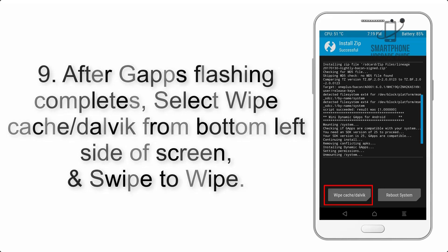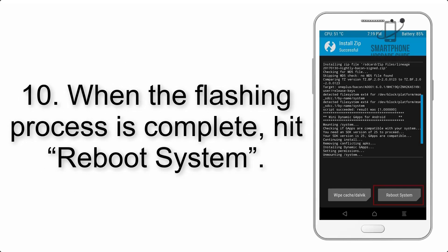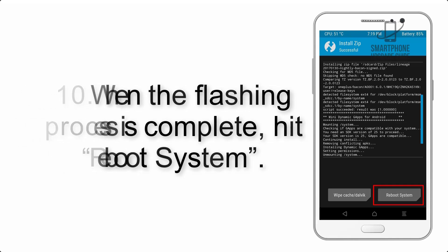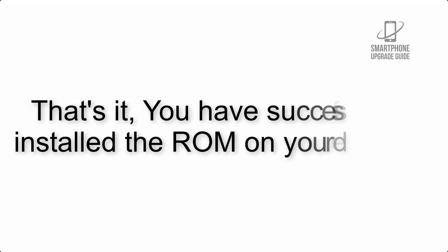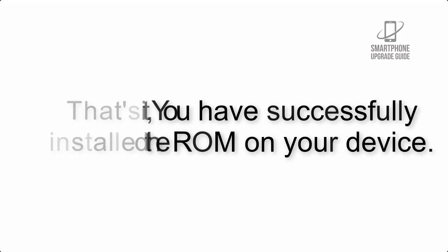Step 8: Flash the GApps zip package in the same manner. Step 9: After GApps flashing completes, select Wipe Cache and Dalvik from the bottom left side of the screen and swipe to wipe. Step 10: When the flashing process is complete, hit Reboot System. That's it — you have successfully installed the ROM on your device.